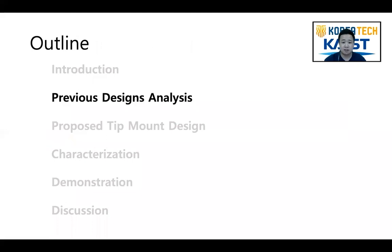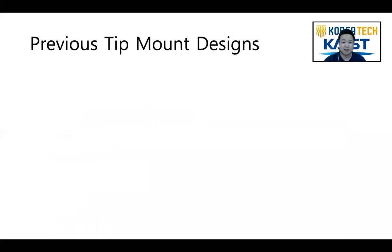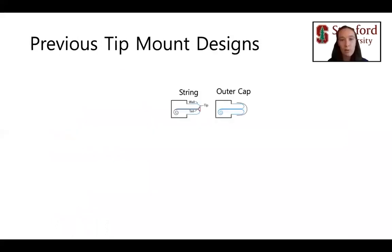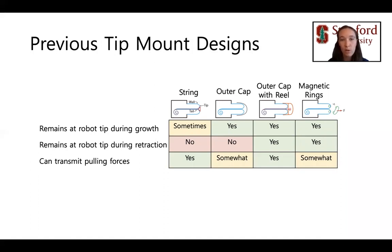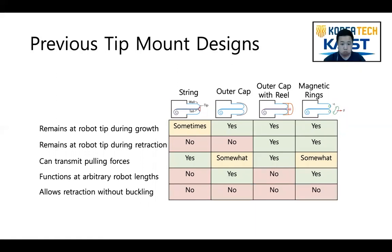Four different soft-growing robot tip mount designs have been previously developed. However, none of these designs meets all the requirements to give full functionality as a tip mount, which include the ability to successfully remain at the robot tip during both growth and retraction, transmit significant pulling forces from the robot body to the environment, and function consistently at an arbitrary robot length. Additionally, none of these designs allow retraction of the robot body without undesired buckling.